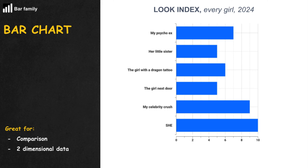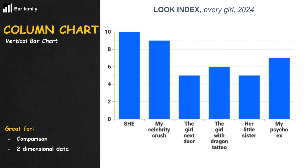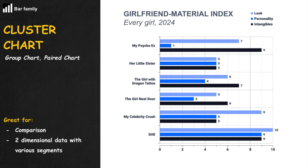A bar chart is a set of rectangles placed on an x and y axis, each length proportional to the values it represents. When those rectangles turn 90 degrees to go from the ground up, we have a column chart. When some bars or columns are from the same category, we place them together in a grouped bar or column chart, which people also call a clustered bar or column chart.